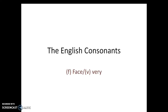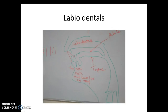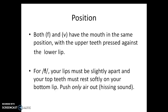The English consonants F and V are labiodentals. This picture clearly shows how F and V function in our mouths. Both F and V have the mouth in the same position, with the upper teeth pressed against the lower lip.